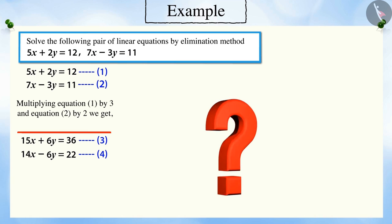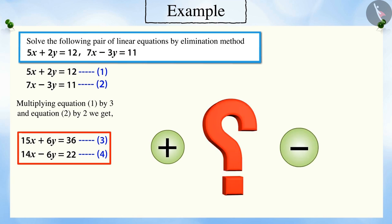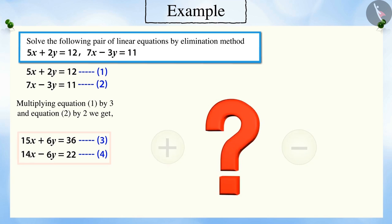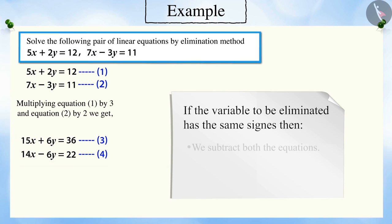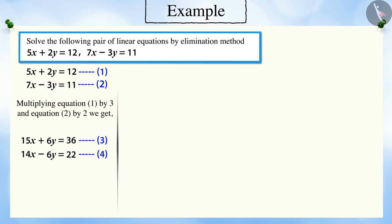Can you tell whether we need to add or subtract the equations to eliminate variable y? Very good! Since the variable to be eliminated has opposite signs, we will add both the equations. Adding equations 3 and 4, we get x is equal to 2.